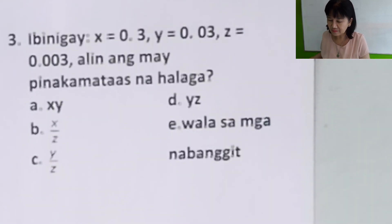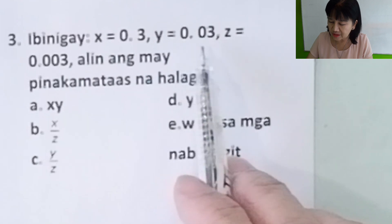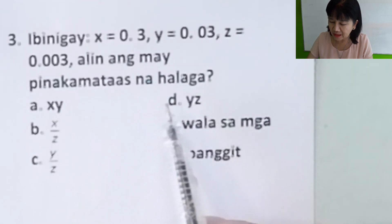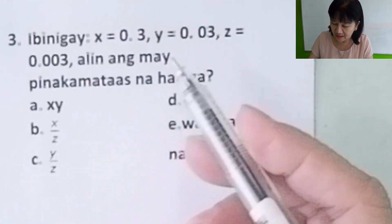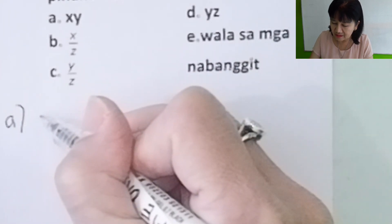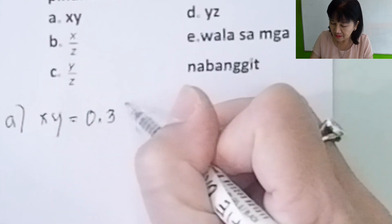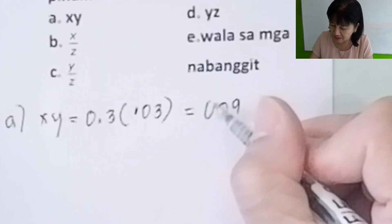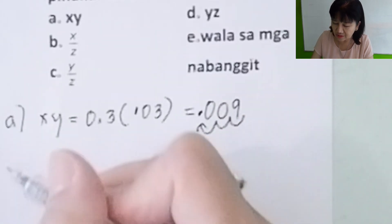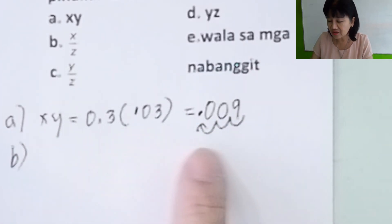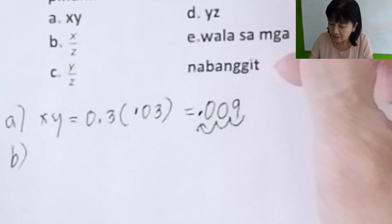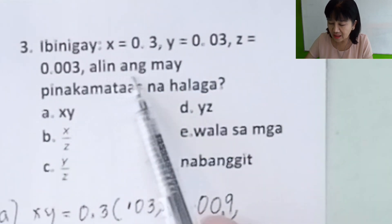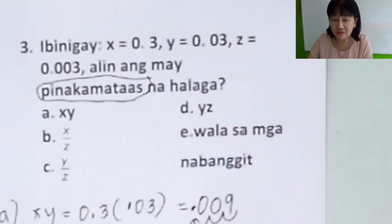Problem number three: x equals 0.3, y equals 0.03, z equals 0.003. Alin ang may pinakamataas na halaga? Letter A, xy: you will multiply x times y, 0.3 times 0.03. Shortcut: three times three is nine. Count the number of decimal places: one, two, three, one, two, three. Repeat: one, two, three. 0.009. You observe that when you're multiplying decimals, the answer becomes small.